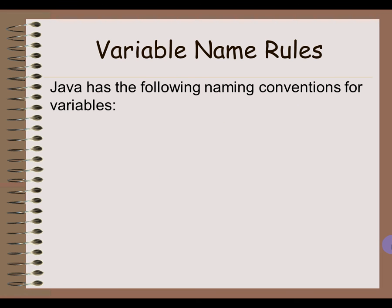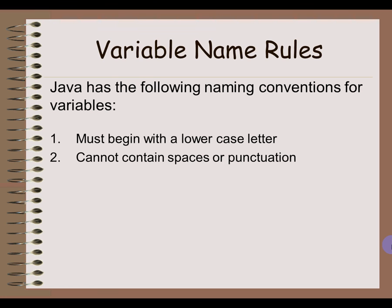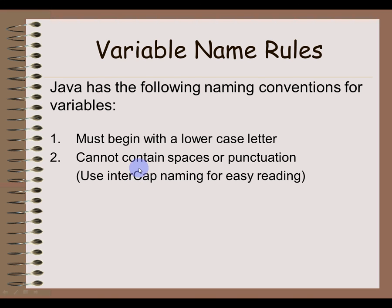There are some rules we have to follow when naming our variables — these are called naming conventions. First, always start with a lowercase letter, not a number or a capital letter. Second, variable names cannot contain spaces or any punctuation; instead, use intercap, where each new word starts with a capital letter, so you can tell that 'interCap' is two words because the new word starts with a capital C.